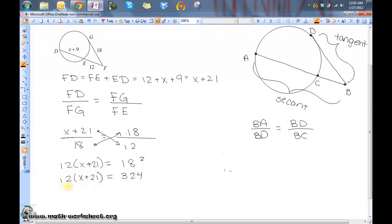Now, instead of distributing, the easiest thing to do is actually to go ahead and divide by 12 now, because x plus 21 can equal 27, because 324 is divisible by 12.